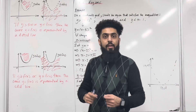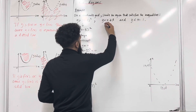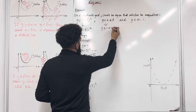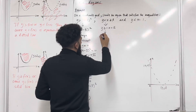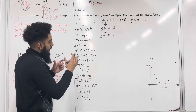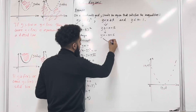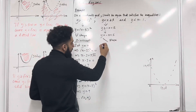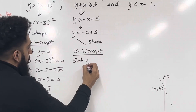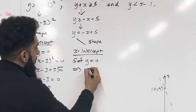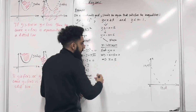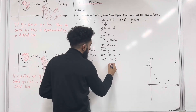Now let's move on to the second inequality. I can rearrange this inequality to give me y is greater than or equal to minus x plus 5. For y equal to minus x plus 5, the coefficient of x is negative 1, so we have a straight line with negative gradient. To find the x-intercept, I need to set y equal to 0. This implies that minus x plus 5 equals 0, which implies that x is equal to 5. So the x-intercept will be 5, 0.